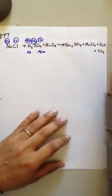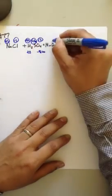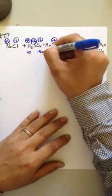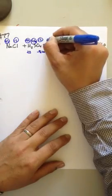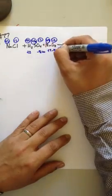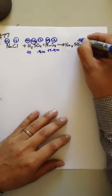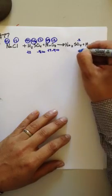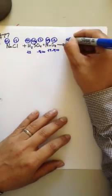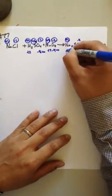Over here, negative two times two is negative four, this has to be plus four to cancel out to equal zero. Same thing over here, negative two times four is negative eight, sodium plus one plus two.